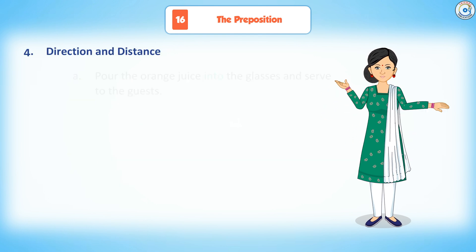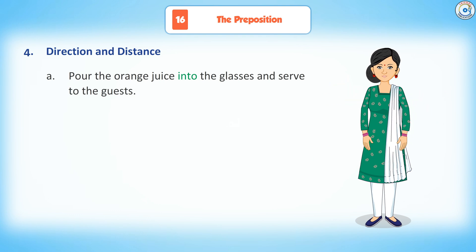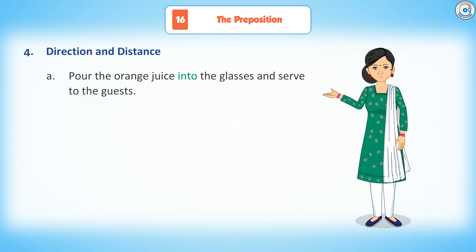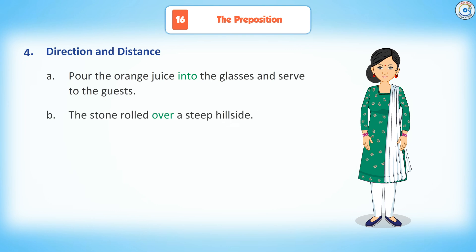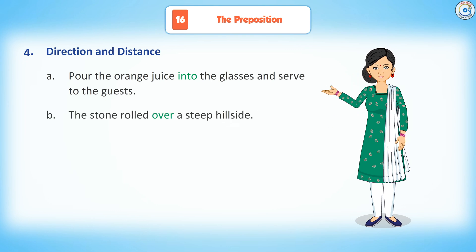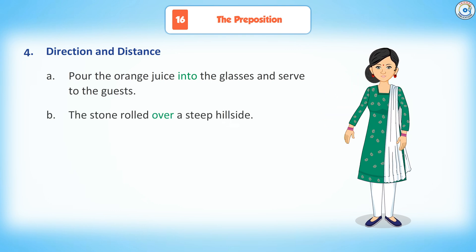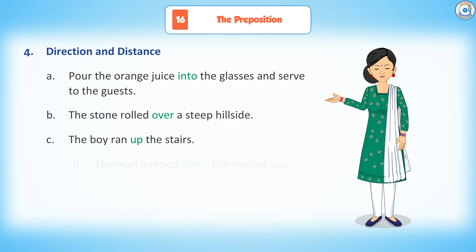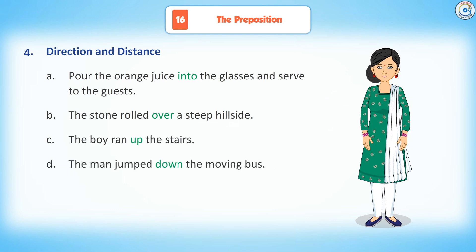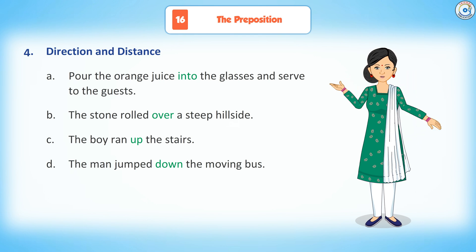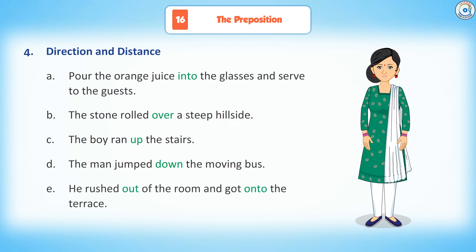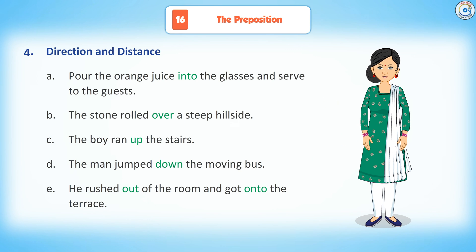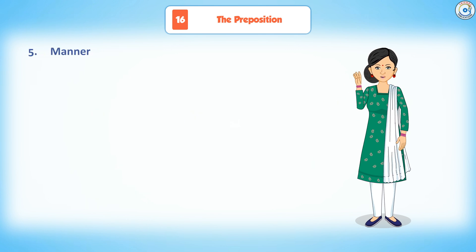Fourth, direction and distance. Pour the orange juice into the glasses and serve to the guests. The stone rolled over a steep hillside. The boy ran up the stairs. The man jumped down from the moving bus. He rushed out of the room and got on to the terrace.